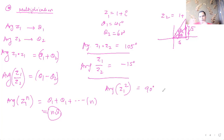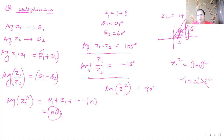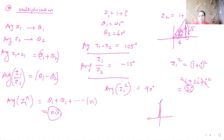We can verify: z1² = (1+i)² = 1 + 2i + i² = 1 + 2i - 1 = 2i. The argument of 2i is indeed 90°, confirming the property. That's how you apply these properties of modulus and argument of complex numbers.